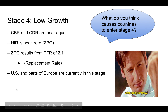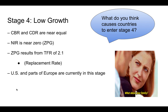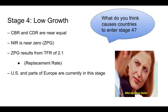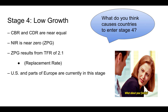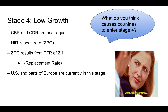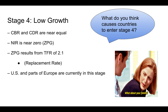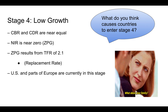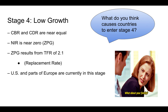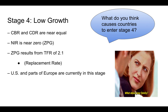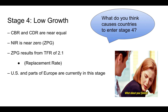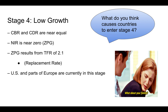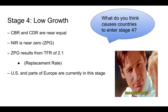Stage 4 is where we see ZPG — zero population growth — where CBR and CDR are almost equal, meaning no population growth. CBR stays at a replacement level of 2.1. The United States TFR has hovered around ZPG since the 2000s, because women have entered the workforce and make up a large percentage of it.